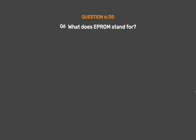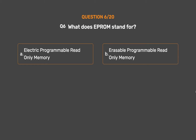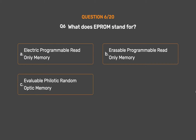Question number 6. What does EEPROM stand for? Option A: Electric Programmable Read-Only Memory. Option B: Erasable Programmable Read-Only Memory. Option C: Evaluable Philotic Random Optic Memory. Option D: Every Person Requires One Mind.